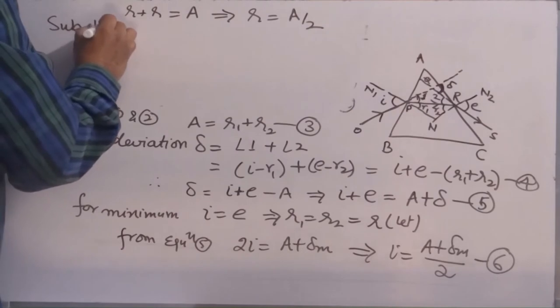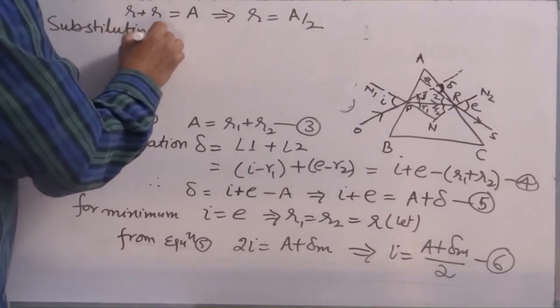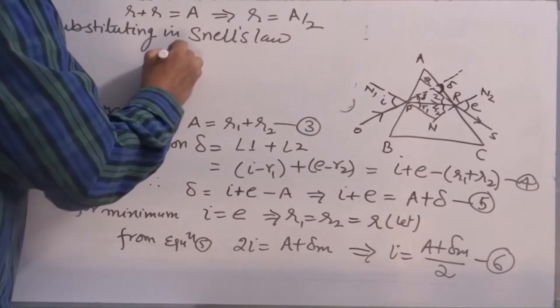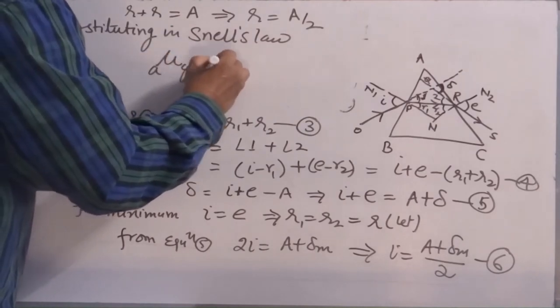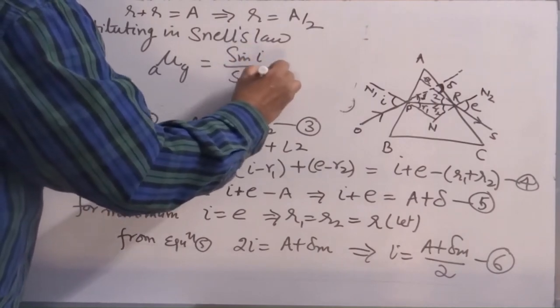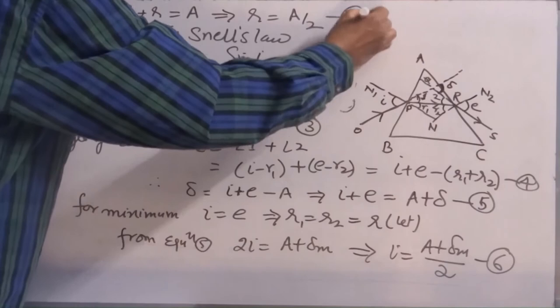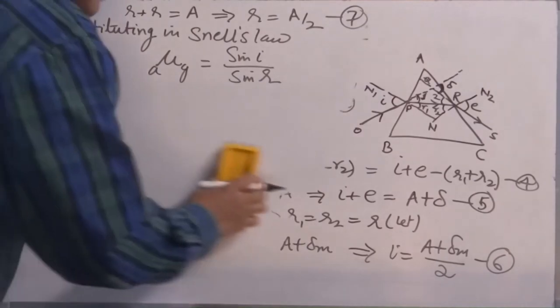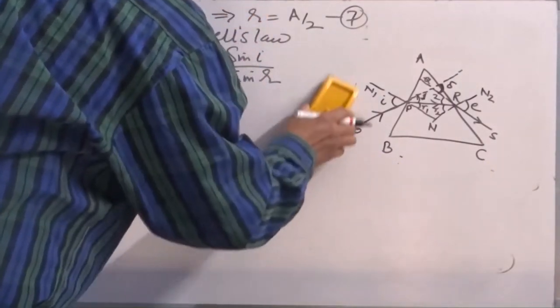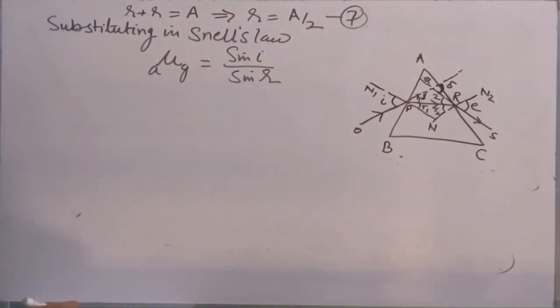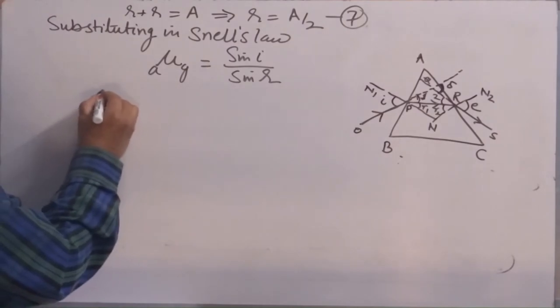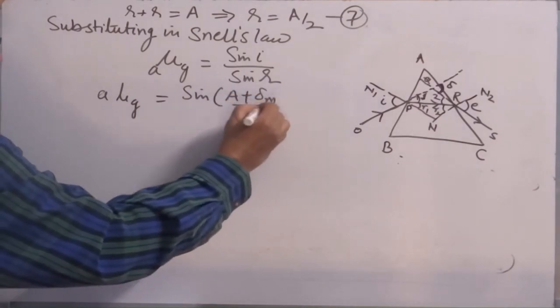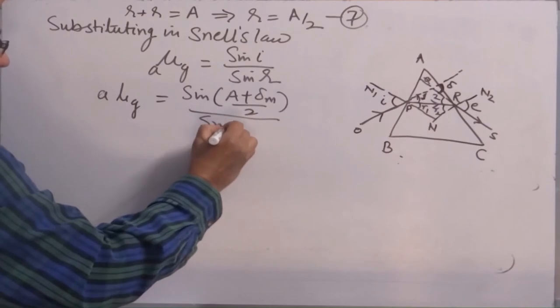Substituting in Snell's law, what you will get? Mu air to glass is equal to sin I over sin R. When you put these values, you will get A mu G is equal to sin A plus delta M by 2 over sin A by 2.